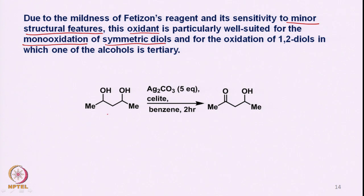We have a symmetric diol and we can carry out a mono-oxidation — that means between the two, we can oxidize only one of the alcohols even if we use excess silver carbonate. Because it is a slow reaction, one can monitor and stop when the oxidation of one hydroxy group to the corresponding ketone is complete.